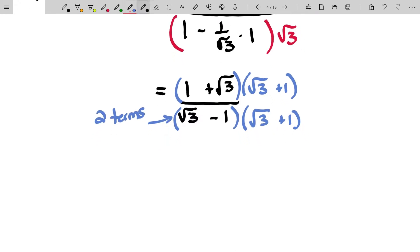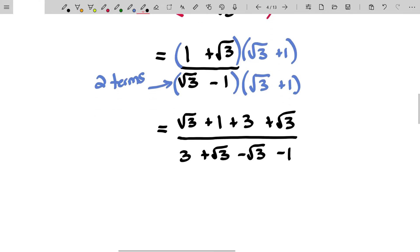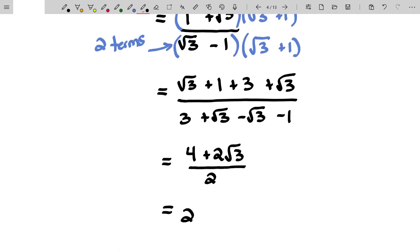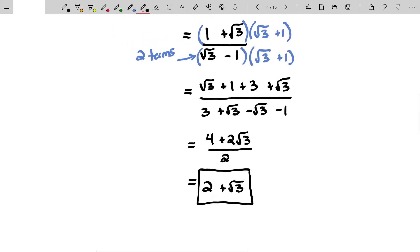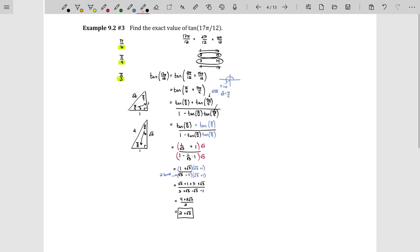So you're going to rationalize this denominator by multiplying both numerator and denominator by its conjugate, root 3 plus 1. And when you do that in the numerator, you'll get root 3 plus 1 root 3 plus 3 plus root 3, all over in the denominator, you'll get 3 plus root 3 minus root 3, and then minus 1. And that is actually beautiful because we get in the numerator 4 plus 2 root 3. And in the denominator, we get 3 minus 1, which is 2. And that simplifies down to 2 plus root 3. And that would be the tangent of 17 pi over 12.